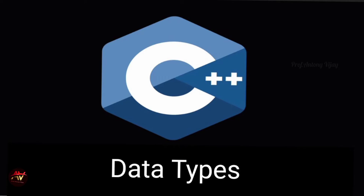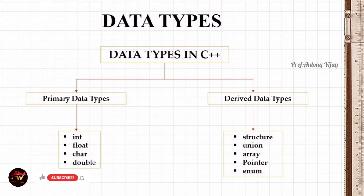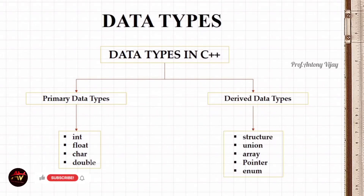Data types are used to differentiate data. Usually a human can easily understand the different types of data, but the computer cannot. So in order to help the computer understand, we use certain keywords like integer, float, and others.